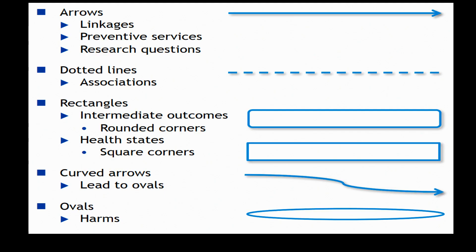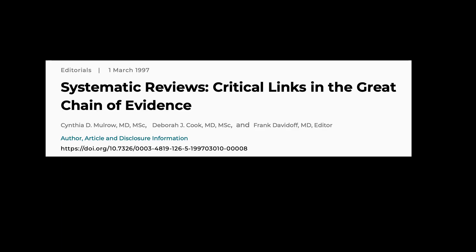These analytic frameworks use arrows and boxes, squares, and circles that tell you how everything is joined together. If you're interested in constructing these, you can look at an article by Cindy Mulrow in Annals of Internal Medicine from 1997, where she explains how to do this.